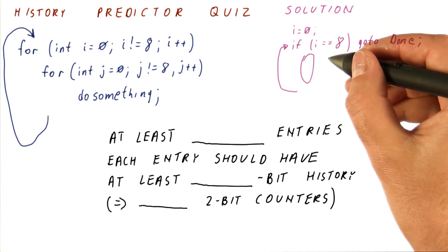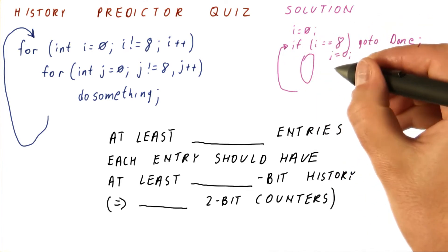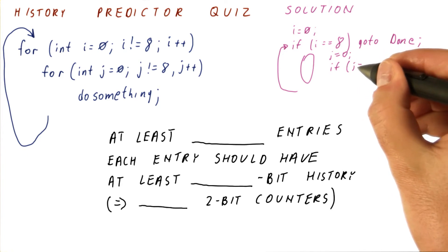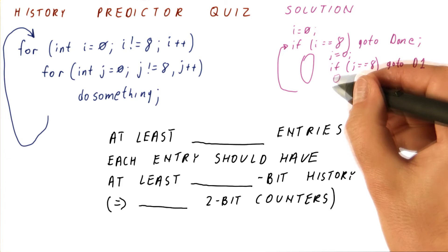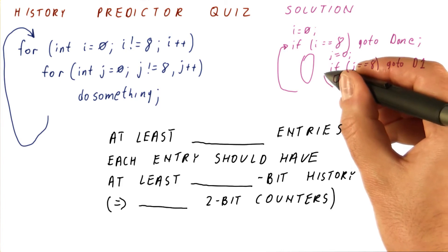The inner loop will just do j equals 0, and then if j is equal to 8, go to some label d1, do something, jump back here.